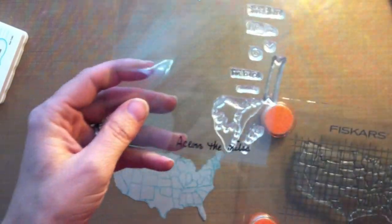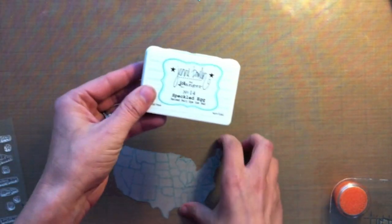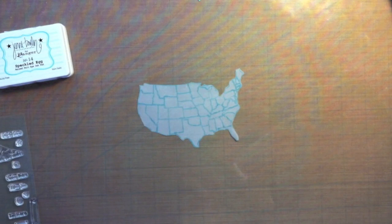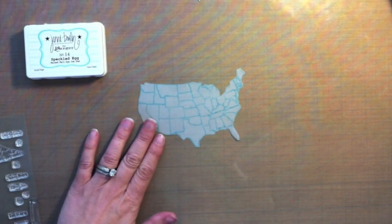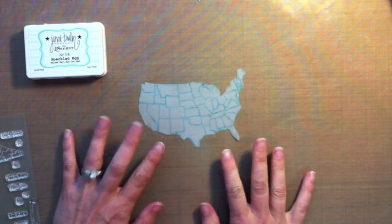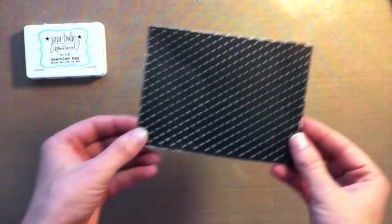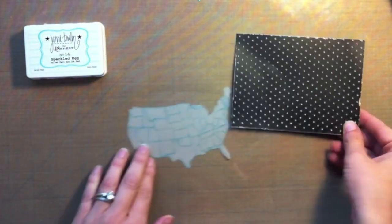I'm using that big map image and I basically took some Jenni Bowlin Speckled Egg ink and I stamped that map image onto some vellum and then I set it aside to dry because it does take a while to dry. And I cut it out obviously.